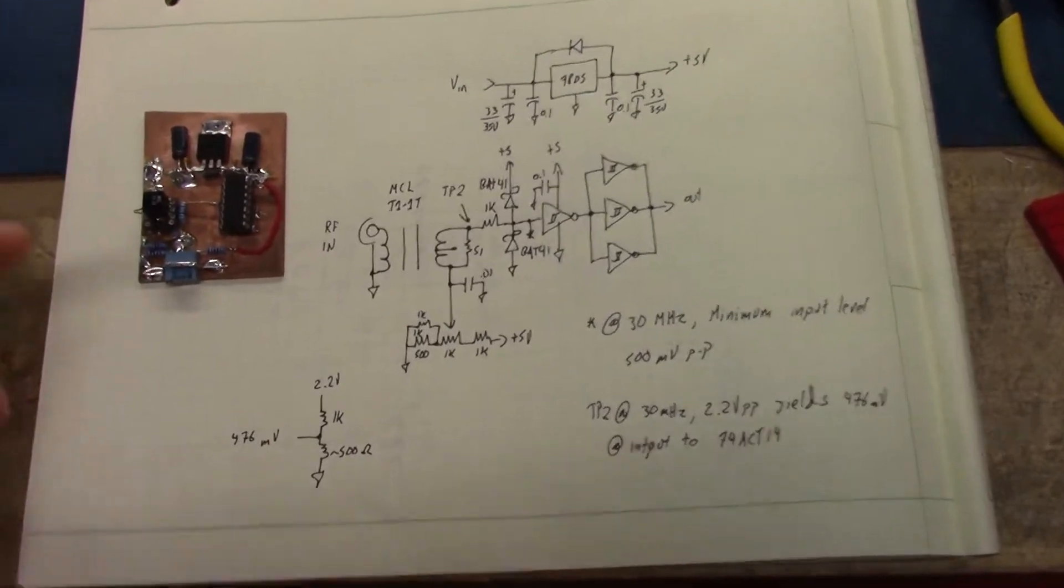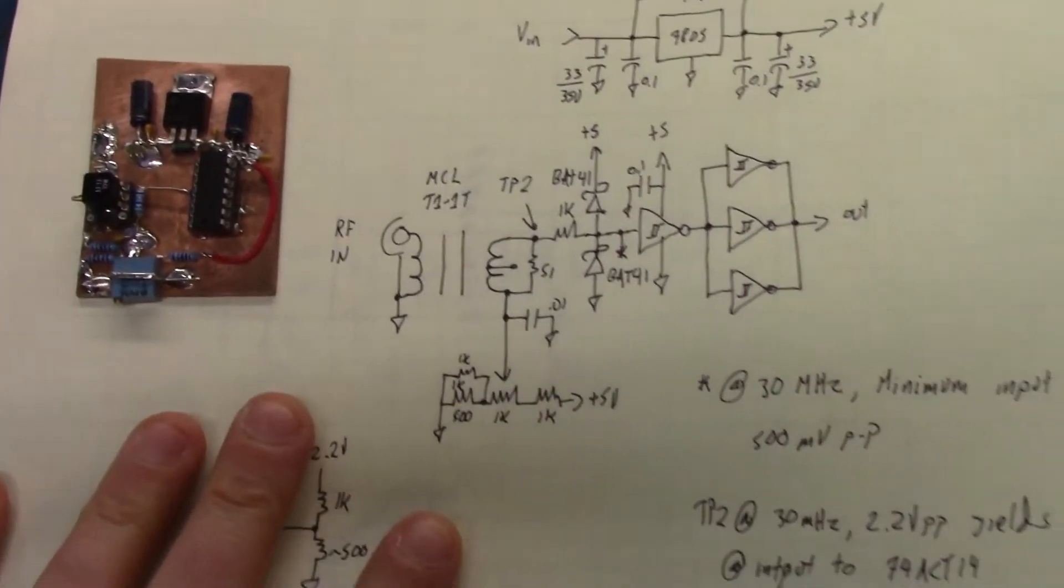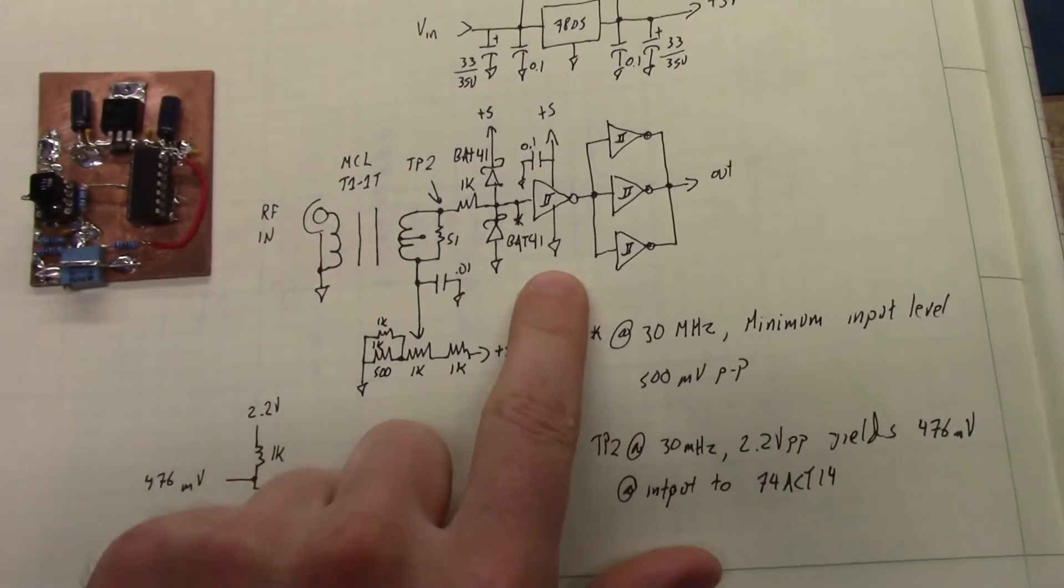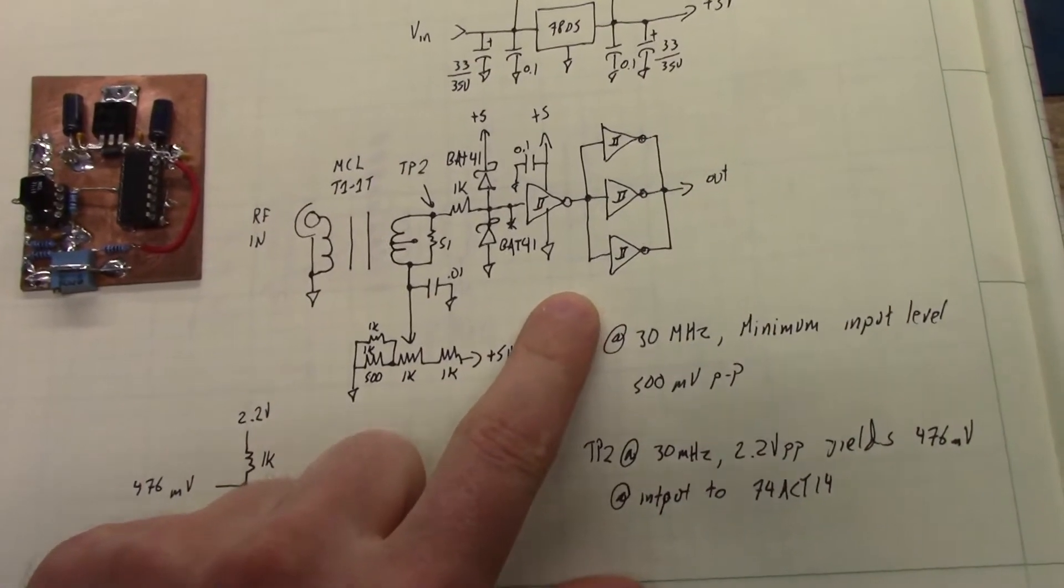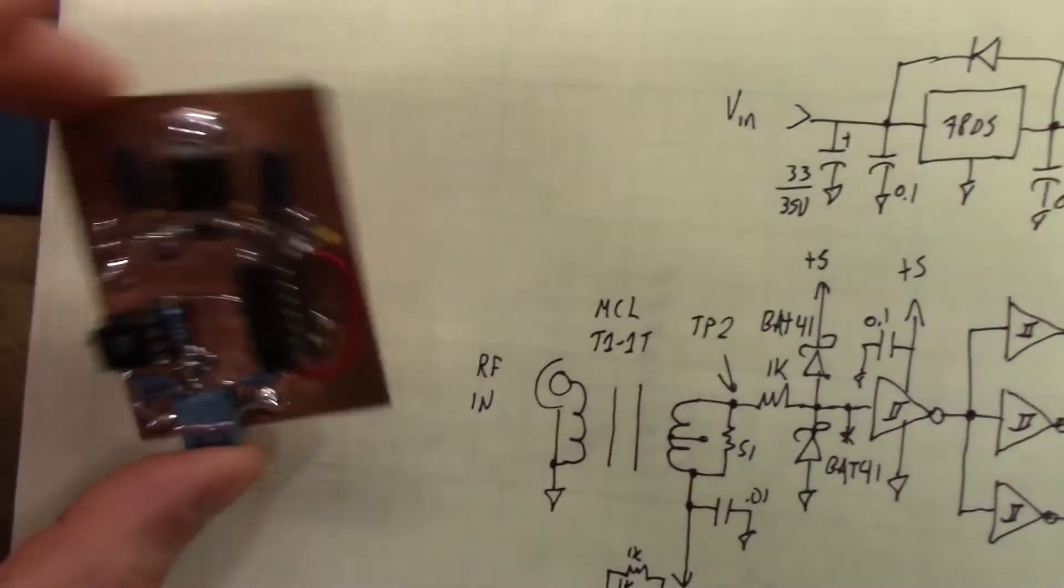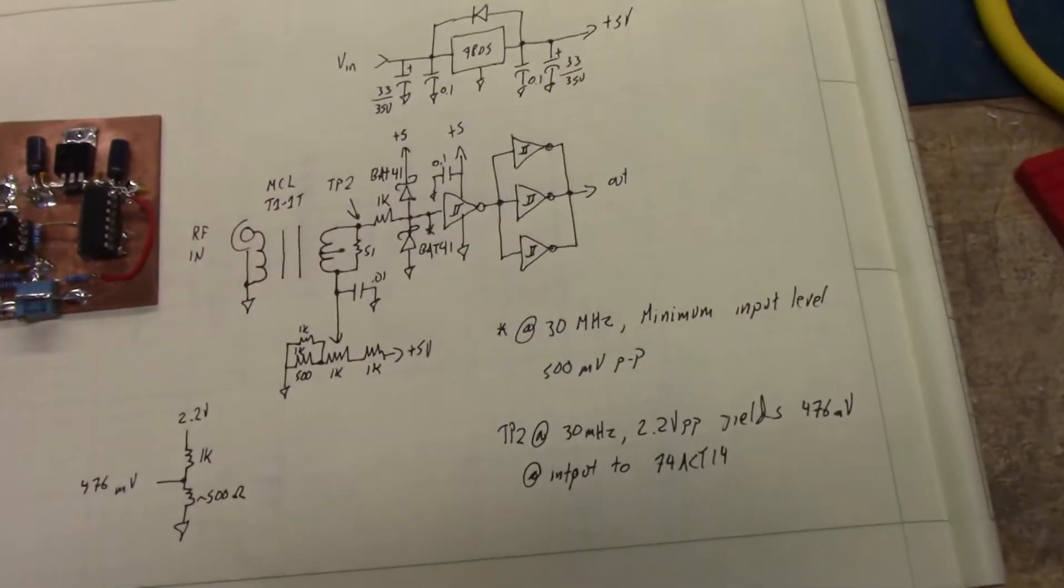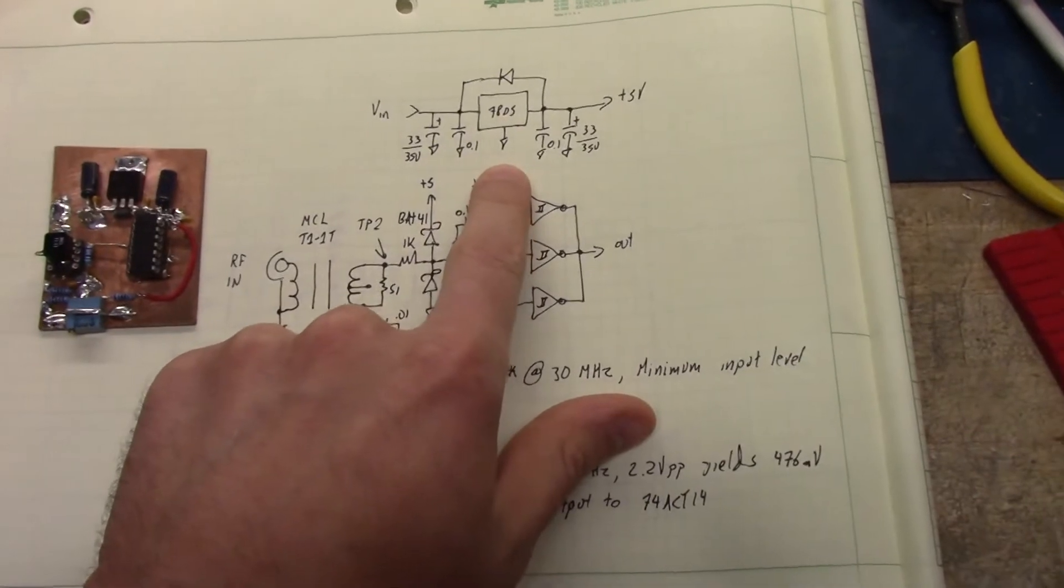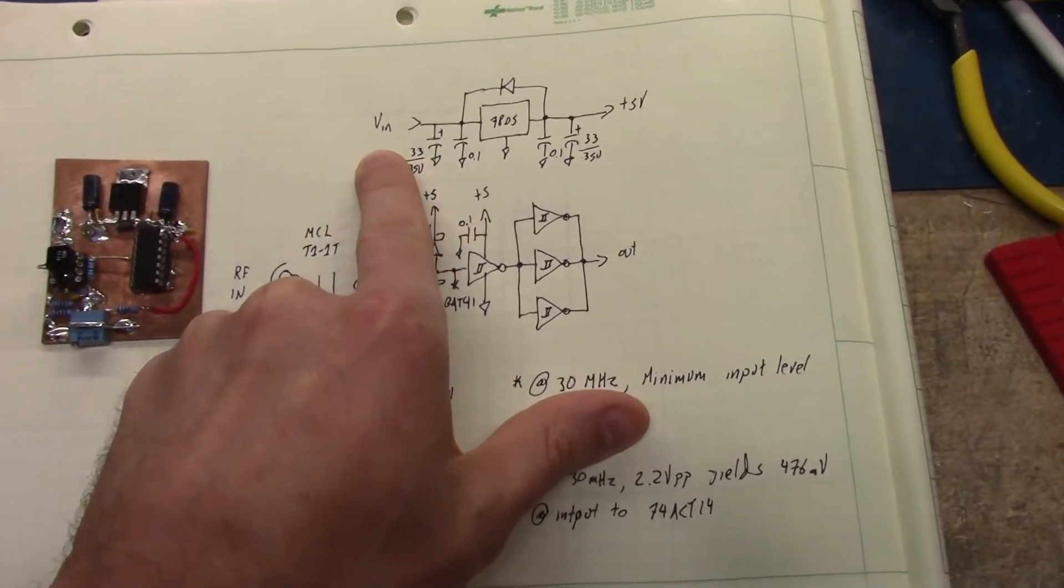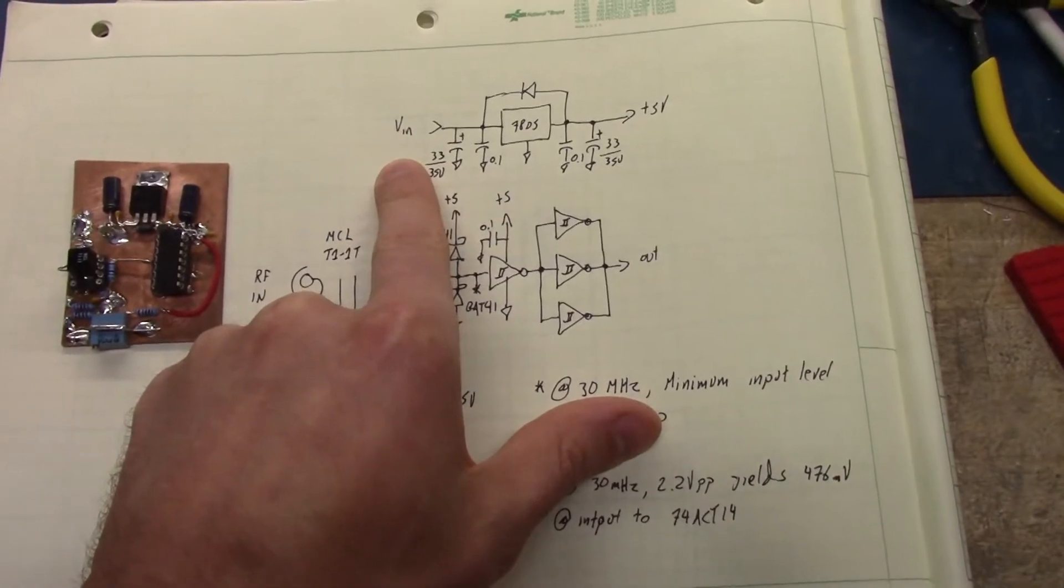The first thing I did was build this little mock-up circuit, which is just the back end limiter. It's a pair of these Schottky 74ACT14 hex inverters. This is the complete circuit. You just have a 5 volt voltage regulator so we can feed in whatever's convenient, usually about 12 volts, because that's what my bench test supply is.